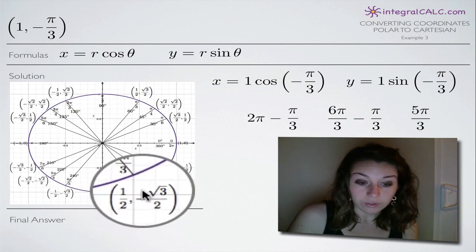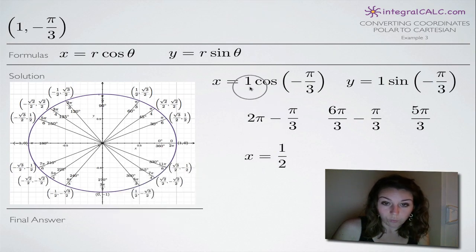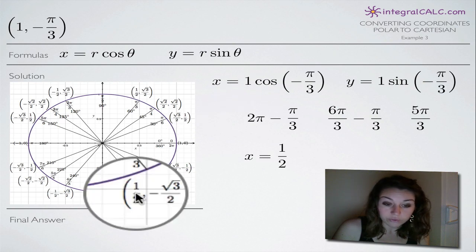When it's sine, we look at the y-coordinate. So in this case, our x equation is going to simplify to 1 times 1 half, because our x-coordinate or cosine of our angle is 1 half, as you can see here.